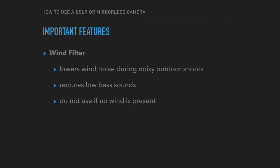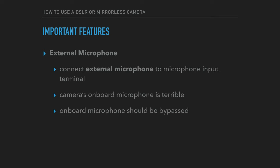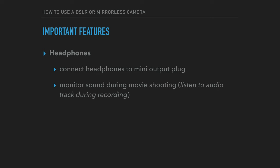It is advisable not to use the wind filter if there is no wind present during the shoot. Another important feature is the external microphone. Good DSLR or mirrorless camera systems usually have a 3.5mm diameter microphone input terminal, which allows the camera person to connect a high-quality external microphone. Since the camera's onboard microphone is poor, this input solves the problem by allowing it to be bypassed and replaced with a much higher quality audio recording device.